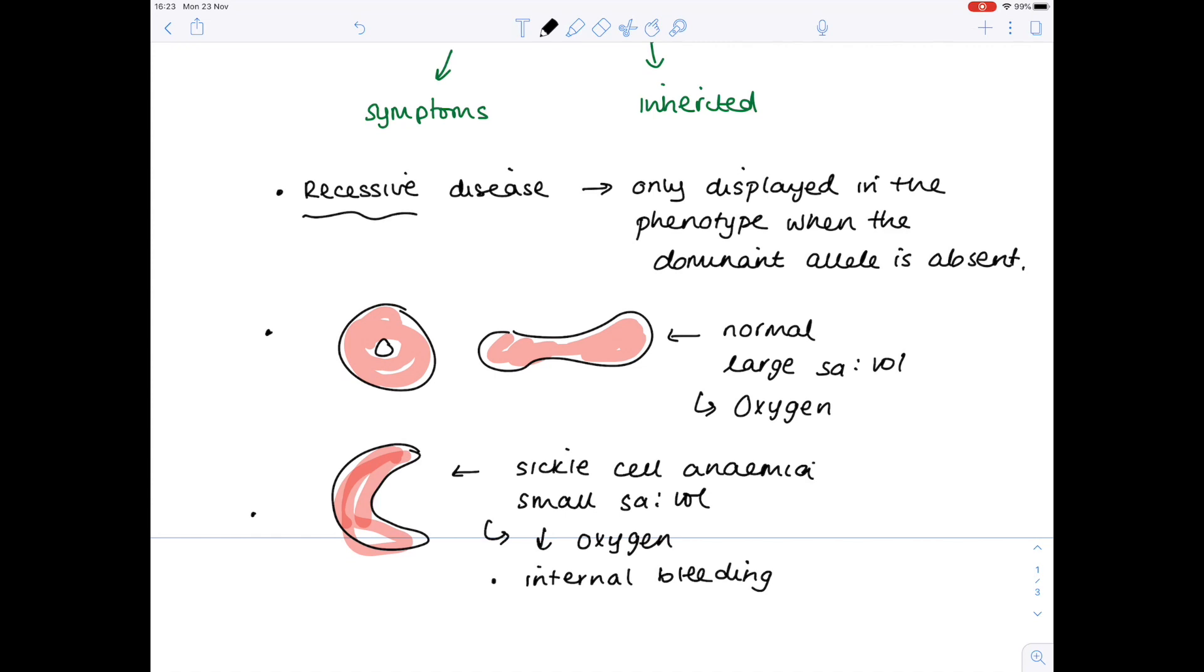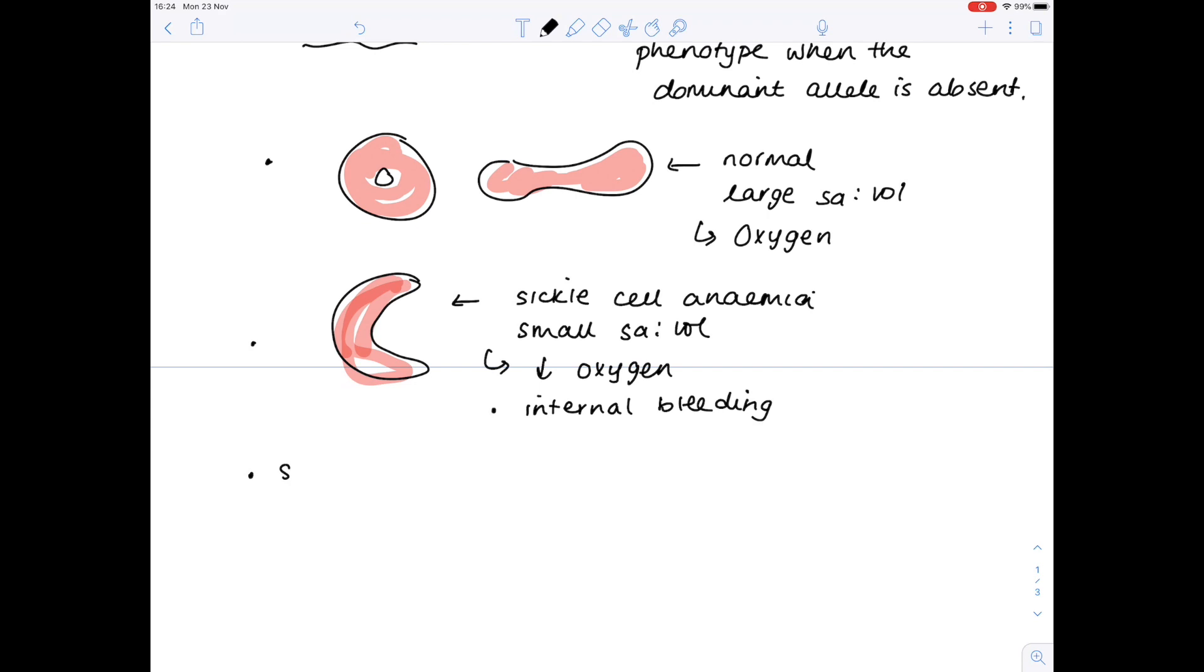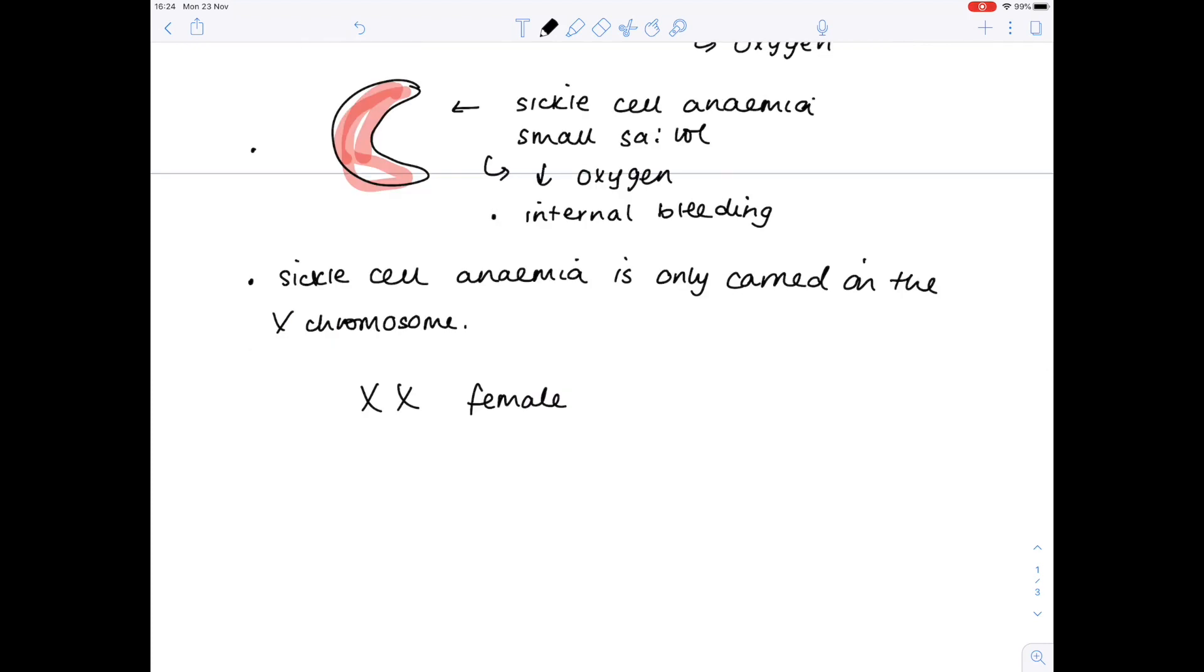Because this video is all to do with how it's inherited, I now need to point out to you that sickle cell anemia is only carried on the X chromosome. But why is that so important? And that's because if you look at the sex chromosomes of a female, remember that she will have two Xs, and a man will have an X and a Y. So if we say that sickle cell anemia is only carried on the X chromosome, then it can only be carried on these chromosomes. It cannot be carried on the Y chromosome.